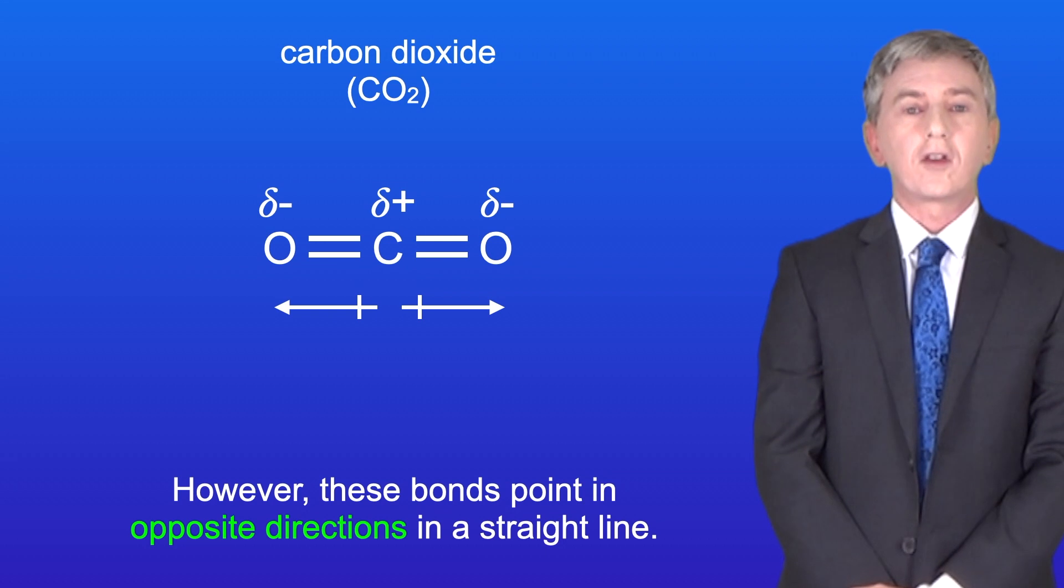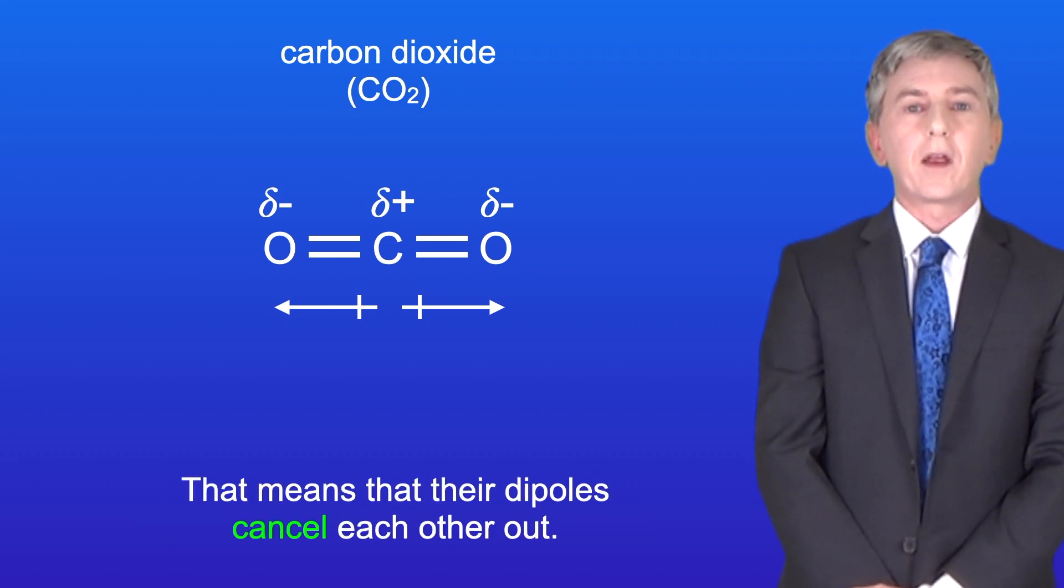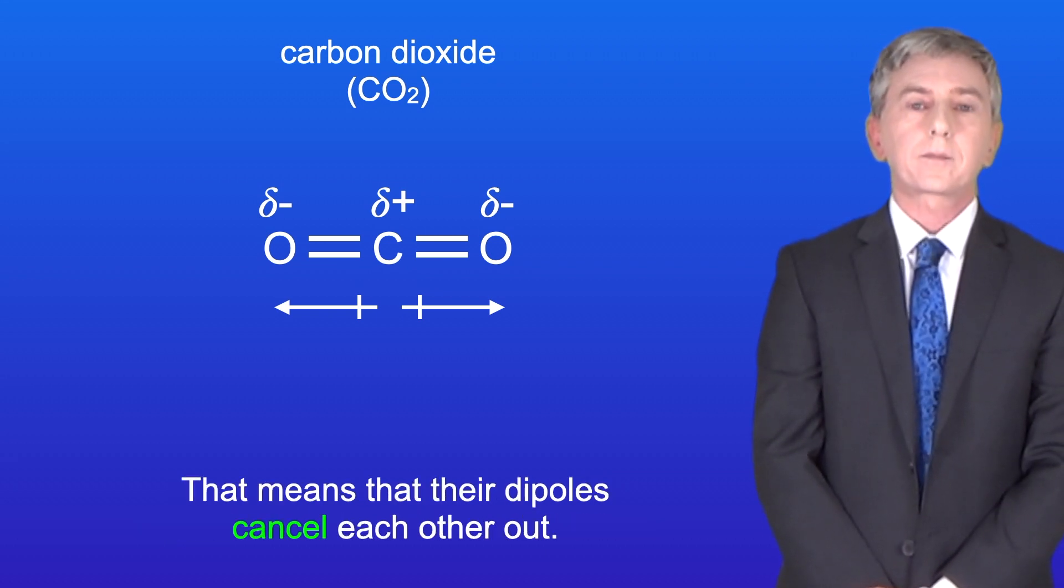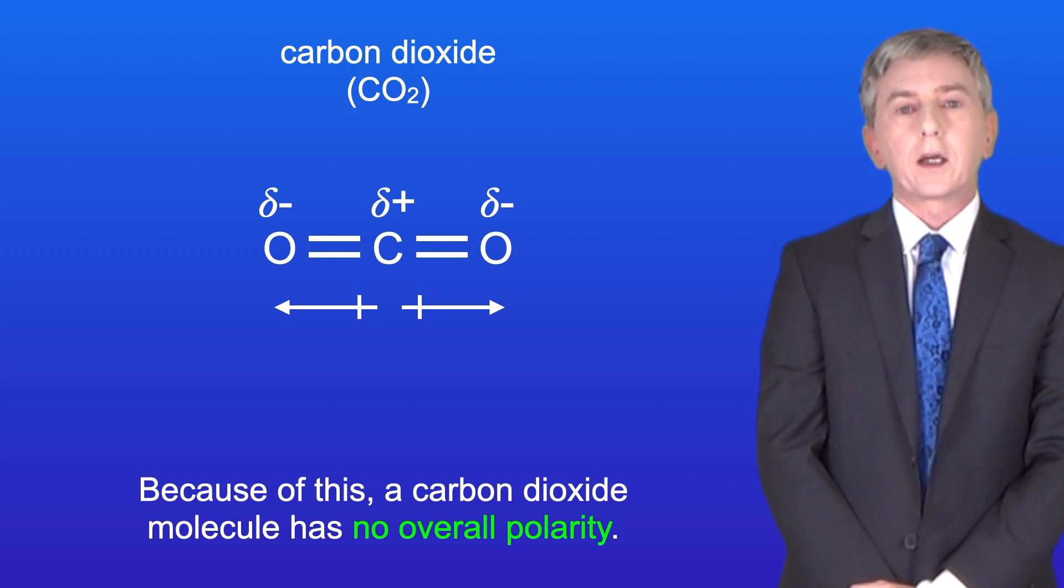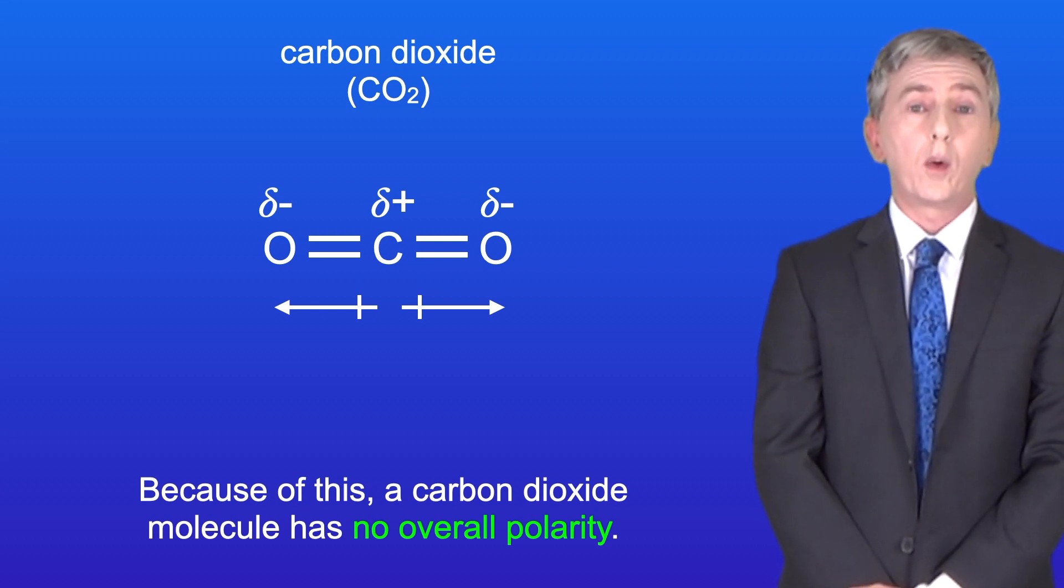However, these bonds point in opposite directions in a straight line, so that means that the dipoles cancel each other out. Because of this, a carbon dioxide molecule has got no overall polarity.